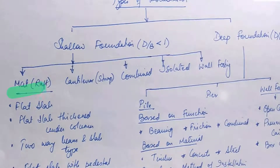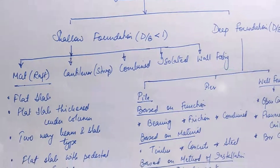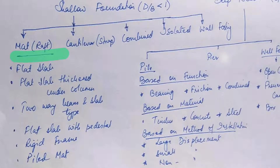Shallow foundations include: mat foundation, cantilever (also called strap footing), combined footing, isolated footing, and wall footing. Mat or raft foundation can be further subdivided into flat slab type, flat slab thickened under column, two-way beam and slab type, flat slab with pedestal, rigid frame type, or pile mat.